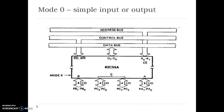Mode 0: simple input-output mode. As seen in this diagram, in mode 0, Port A and Port B are used as two simple 8-bit ports and Port C as two 4-bit ports. Each port can be programmed to function as a simple input or output port.